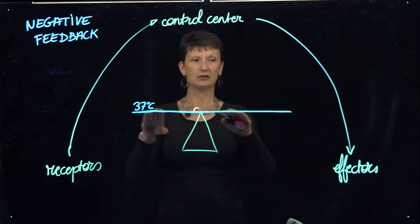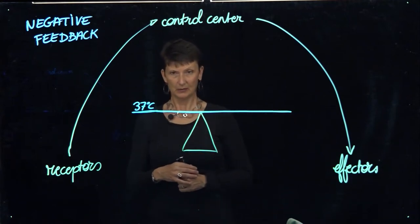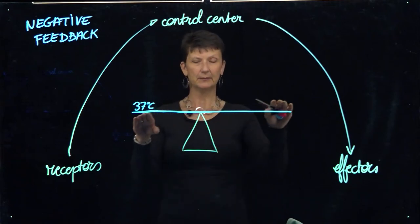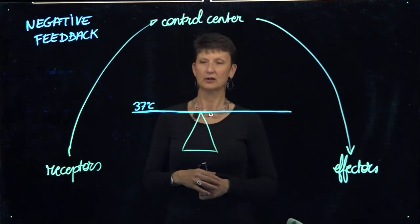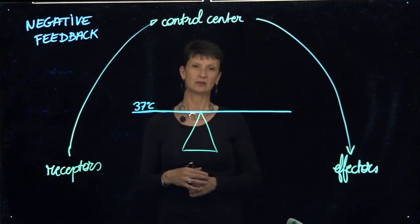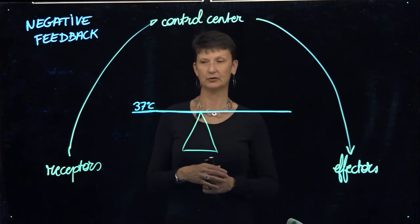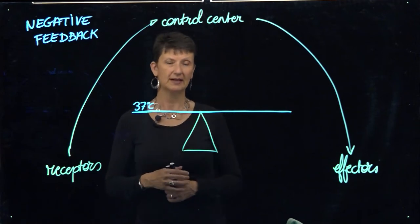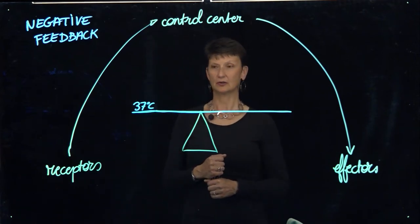What I have here is a flat line, or basically a beam balancing on a pointy structure, representing the body in homeostasis when it comes to body temperature. Our average body temperature tends to be around 37 degrees.